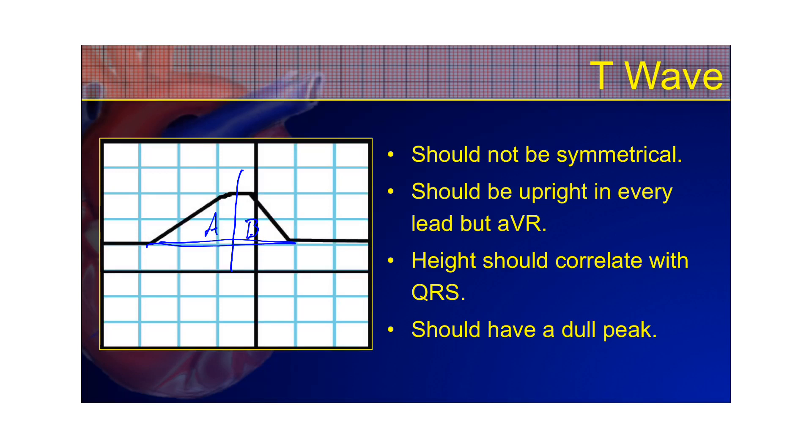Shouldn't be able to make an isosceles triangle if you're a geometry guy by drawing a line there. If it is symmetrical, that means you have some sort of pathology. It's a pathological T-wave. It doesn't mean it's an MI or ACS. It just means something occurred causing it to be abnormal.